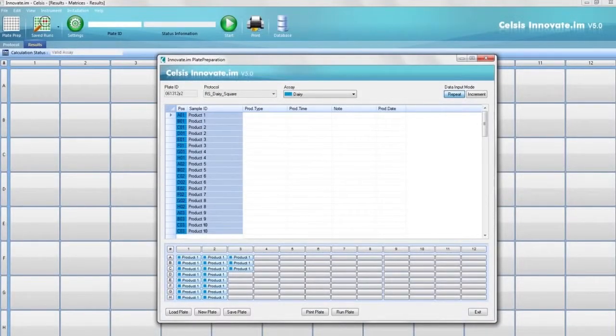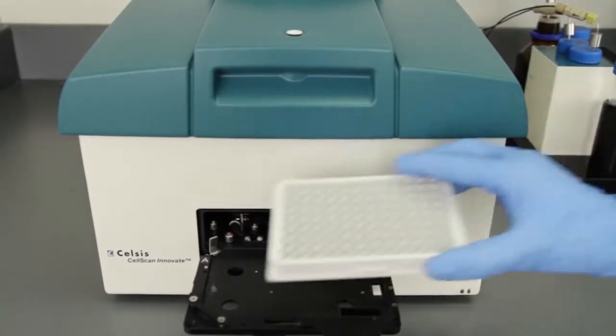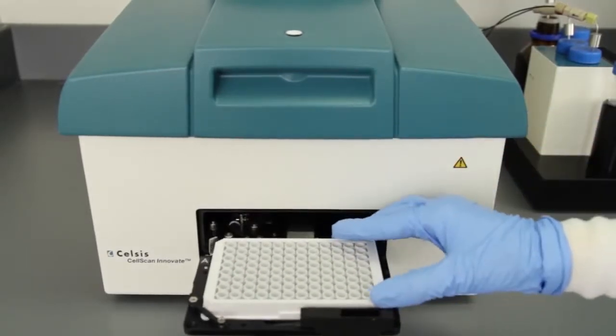Click Run Plate to measure, or Save Plate if you want to enter data for another plate before testing. Click Start to begin. The Innovate will automatically unload the plate carrier. Load your prepared plate and click OK.